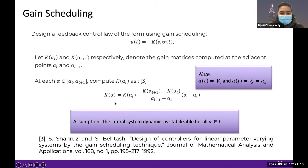Let K(alpha_L) and K(alpha_{L+1}) denote the gain matrices computed at two adjacent operating points alpha_L and alpha_{L+1}. For each alpha belonging to this interval, we compute K(alpha) using a simple interpolation method. The assumption is that the lateral dynamics is stabilizable for all alpha in the set I.